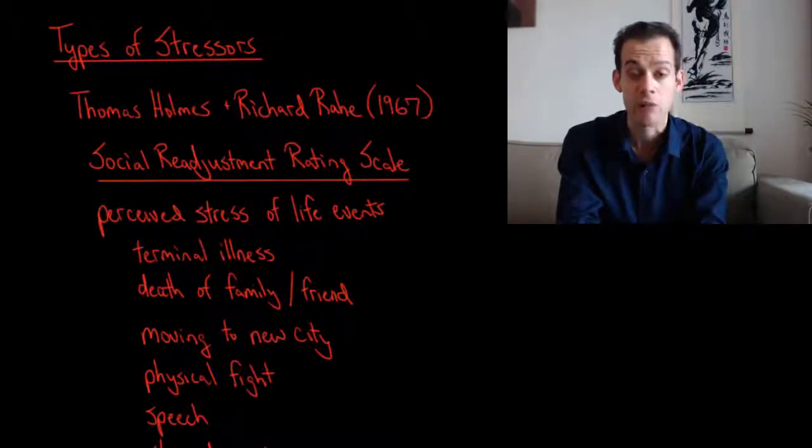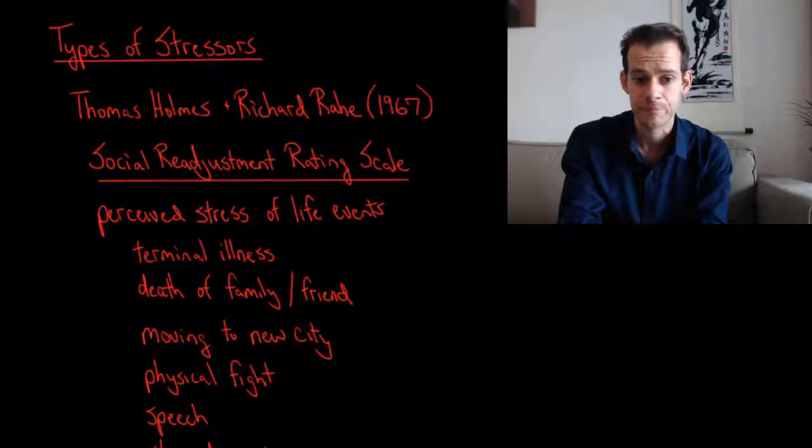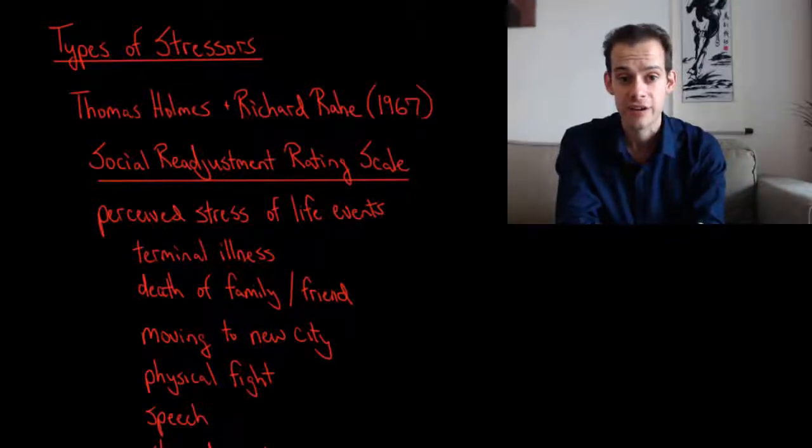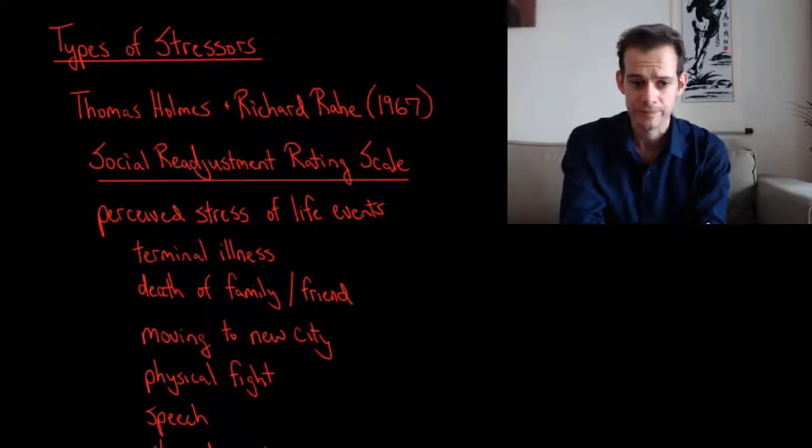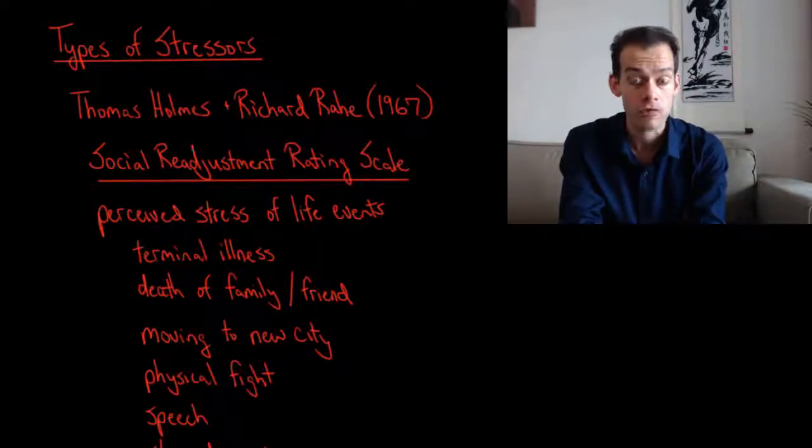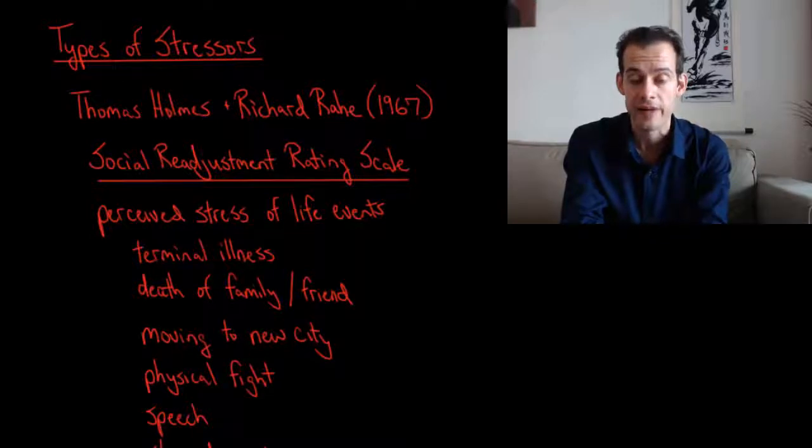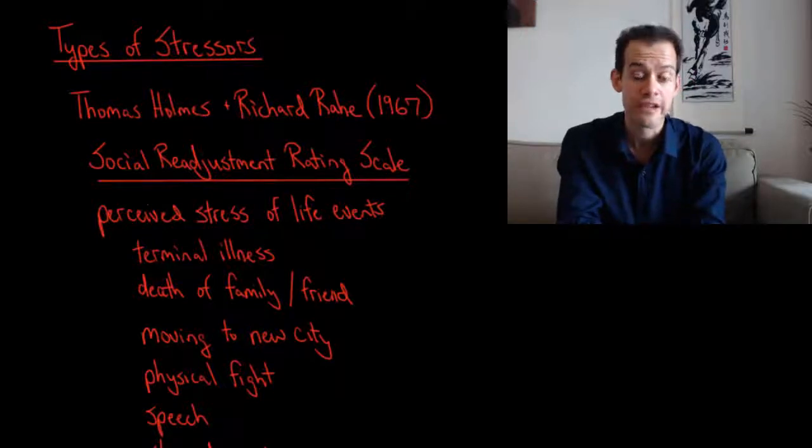So some stressors are more severe than others. So at the high end of this social readjustment rating scale we have things like being diagnosed with a terminal illness or the death of a close friend or family member. These are very stressful events. And then we have sort of mid-level stressors things like moving to a new city or getting into a physical fight with somebody. Quite stressful but not as extreme as the major stressors.